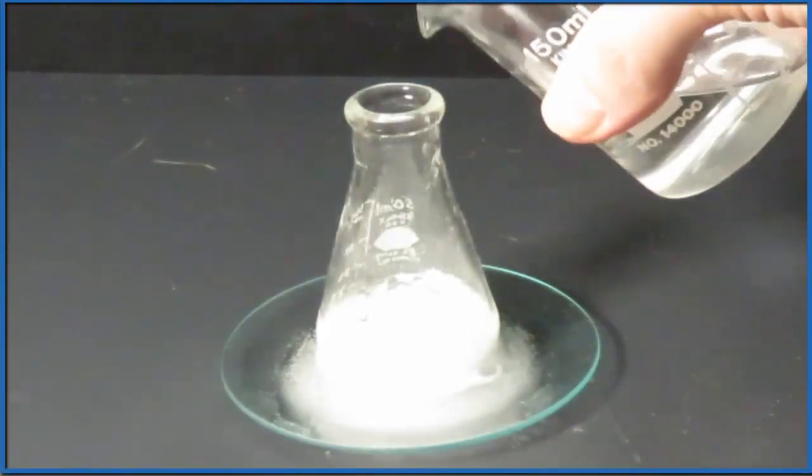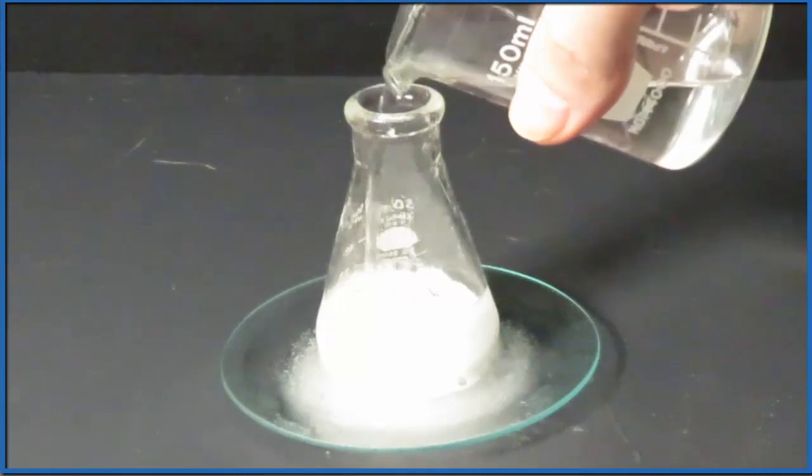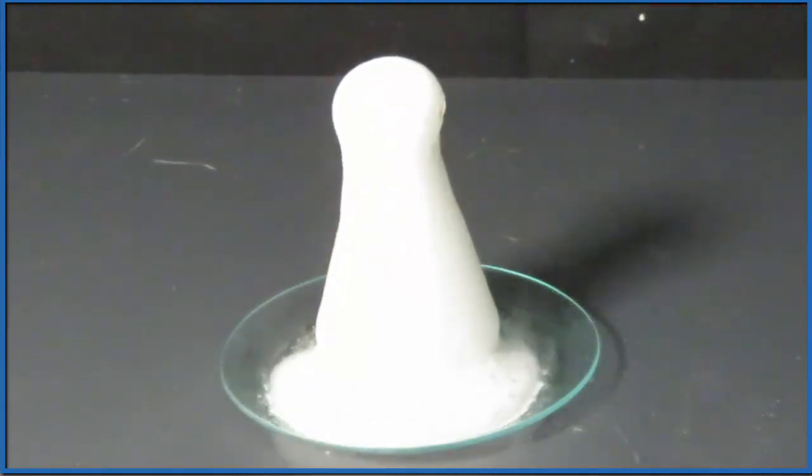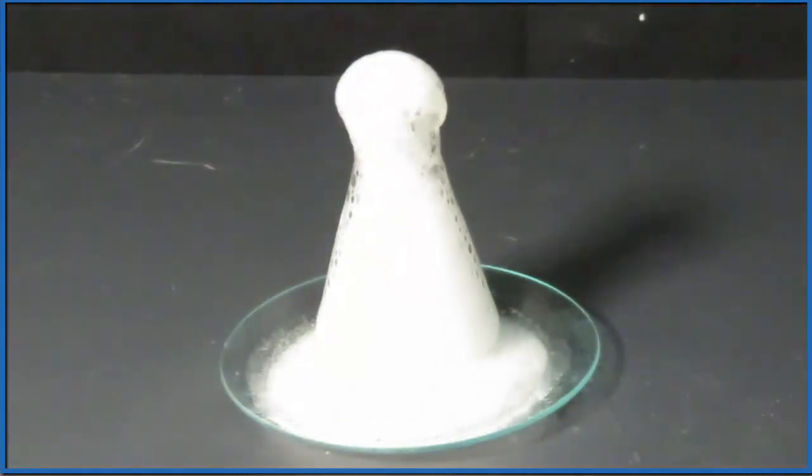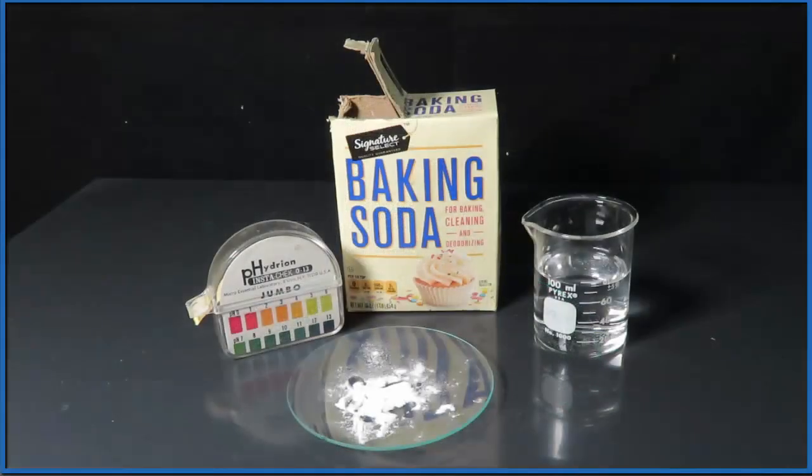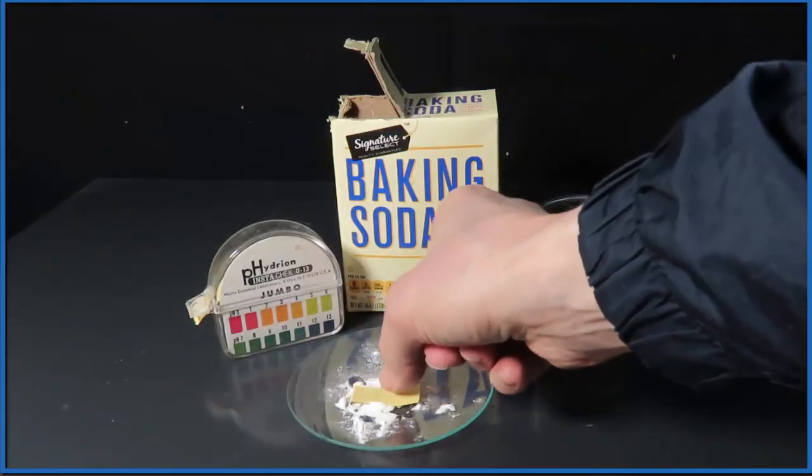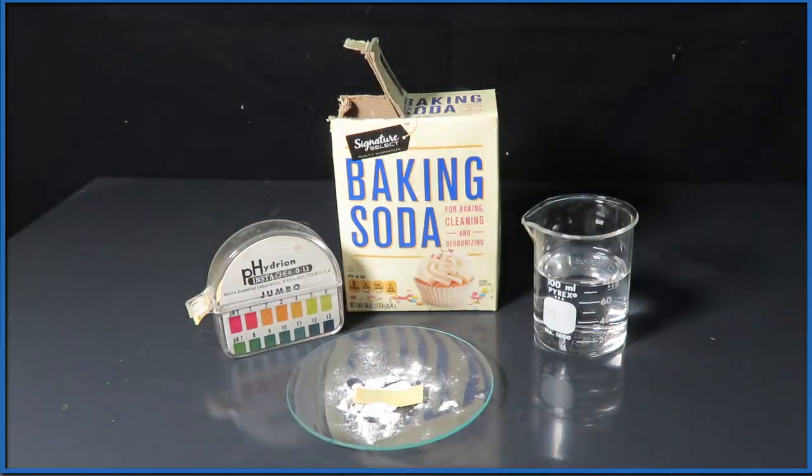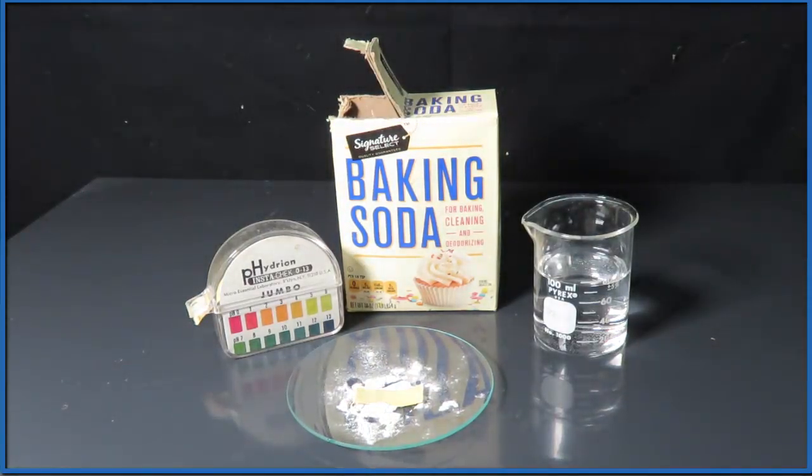In this video we'll take a look at the pH of baking soda. So most people are familiar, you take some baking soda, mix it with vinegar and you get that volcano effect of bubbles. So first we'll look at using pH paper to figure out the pH and then we'll use a pH meter.